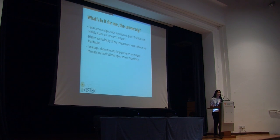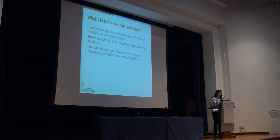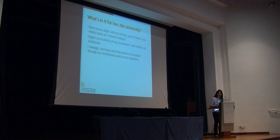What's in it for a university? If I'm a university rector or vice rector, open access clearly aligns with my mission, part of which is to widely share the research produced by my institution — the dissemination and accessibility of research to the outside world. The higher accessibility of researchers' work, which is clear through open access, reflects on the prestige of the institution. Through an open access repository — and the university here has one — I can manage my research, preserve it, showcase it. Institutional repositories are effectively the live museum of the research output of the institution.